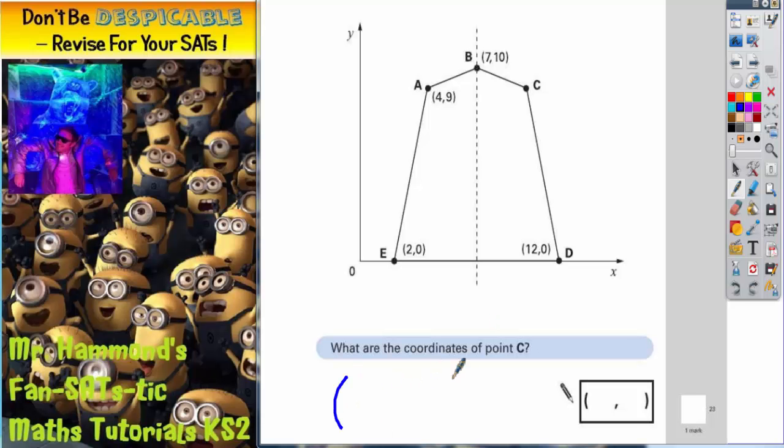Any coordinate, you've got to remember that inside your pair of brackets, the number before the comma is how far along the corridor you go. The number after the comma is how far up the stairs you go. So it's along the corridor first, then up the stairs.